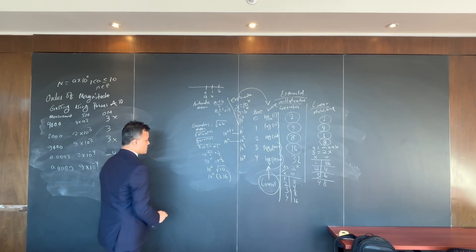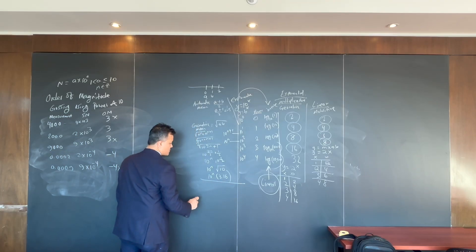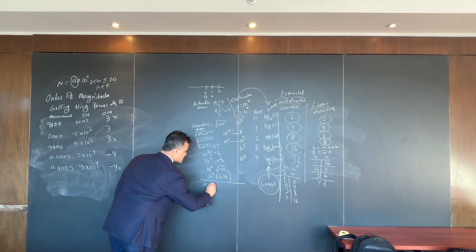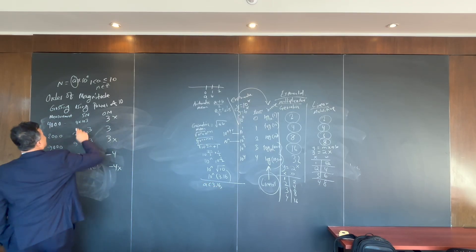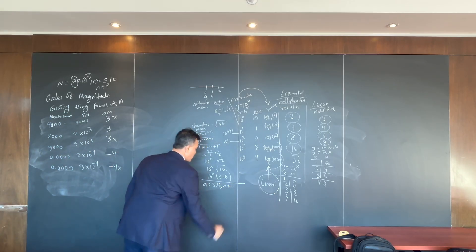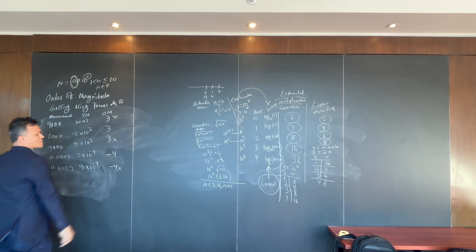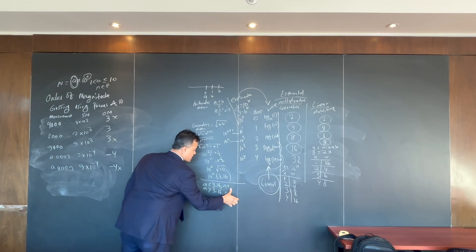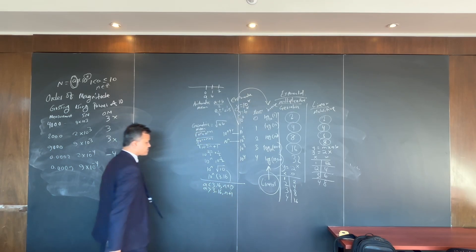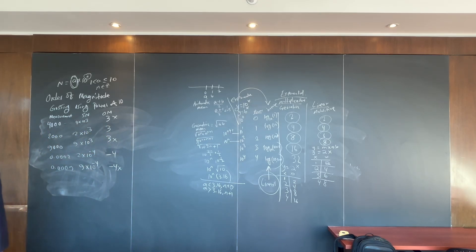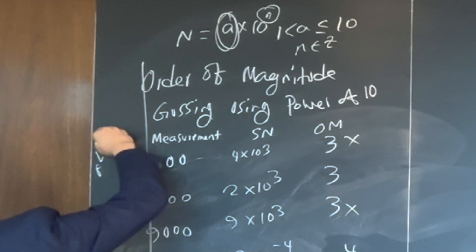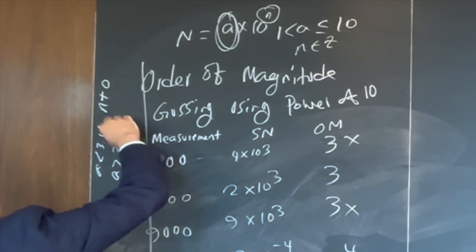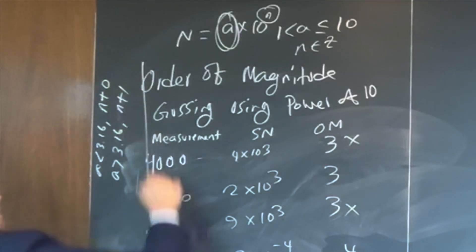Now the rounding rule is pretty subtle. If A is less than 3.16, then the order of magnitude is N plus 0. If A is greater than 3.16, then the order of magnitude is N plus 1. Now we know how to solve them.